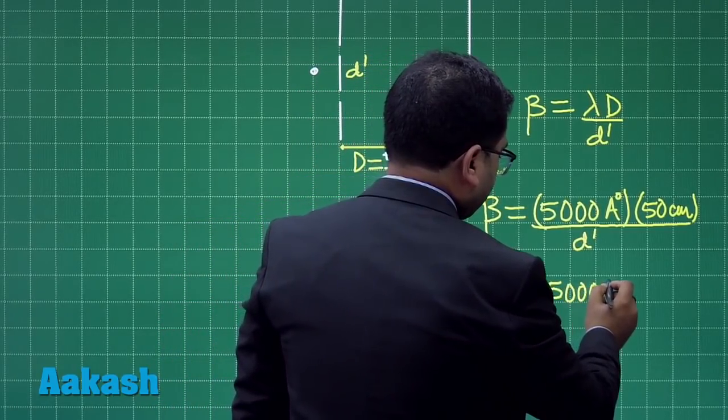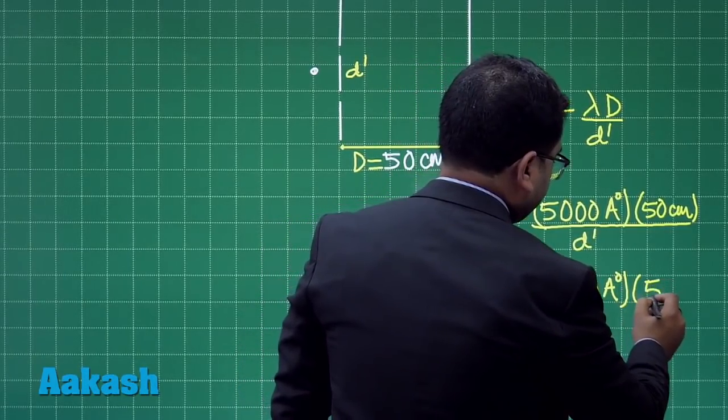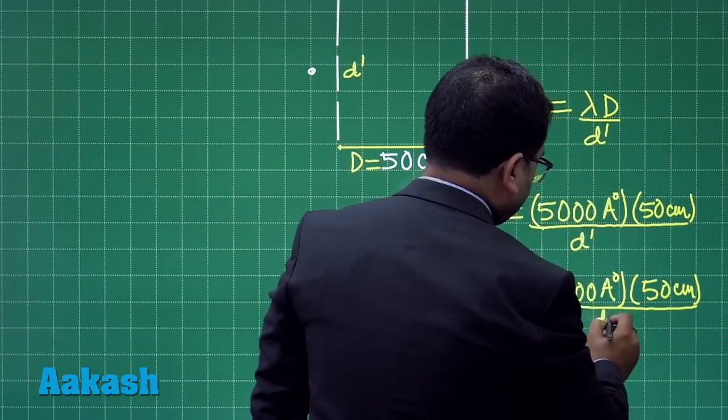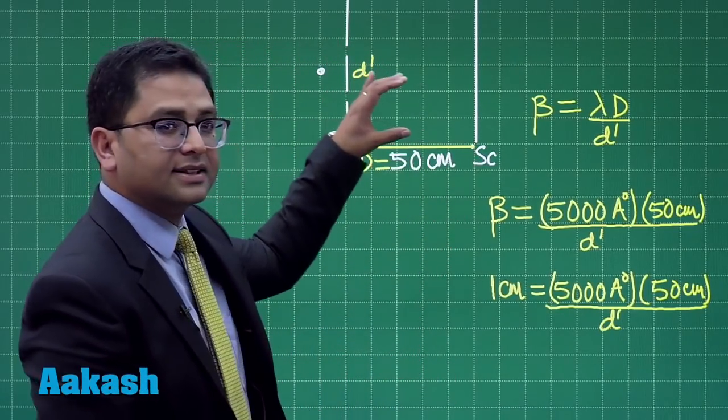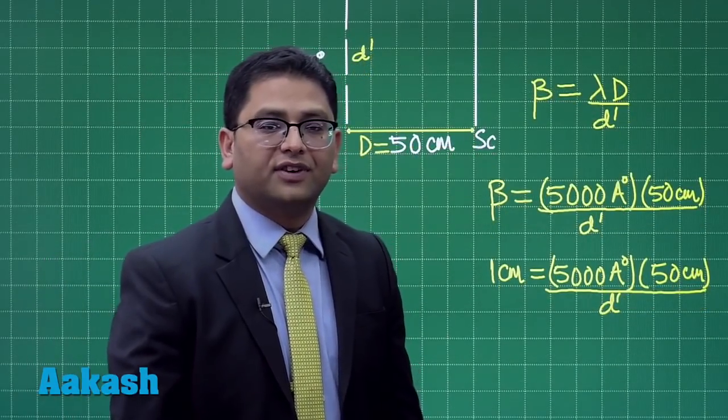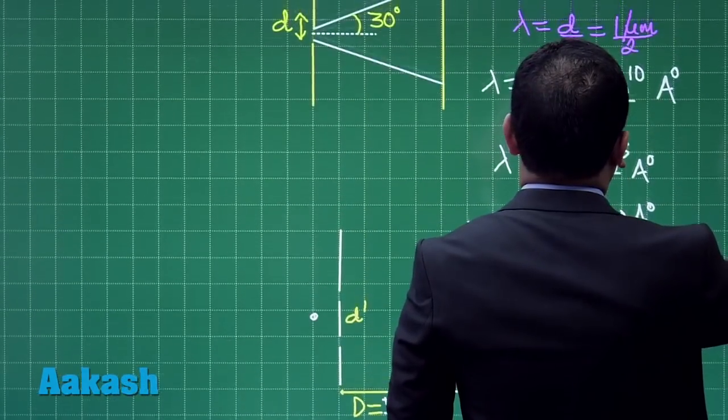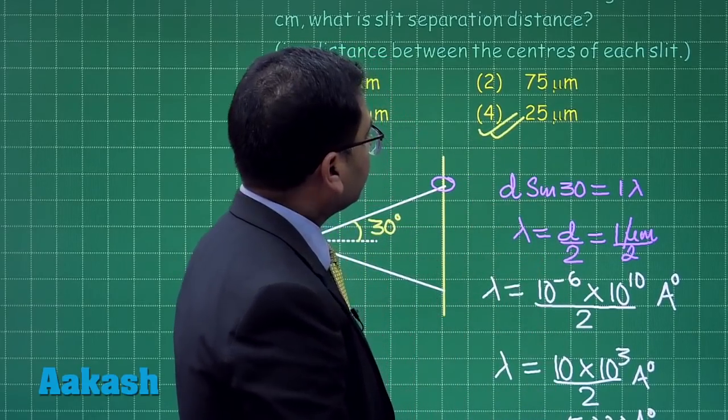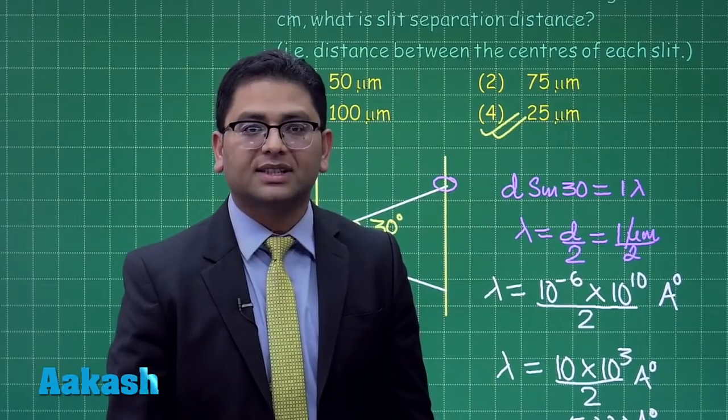The question is demanding the value of D', the separation between the slits. After putting all those values, be careful with the unit, the value of D' what we will get is 25 micrometers. That is a very straightforward solution, so option number 4 is going to be the right answer for question number 61. Now let us proceed to question number 62.